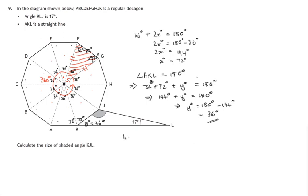So finally, in triangle KJL, let's call this z degrees. 36 degrees, this is the angle we're asked to find.